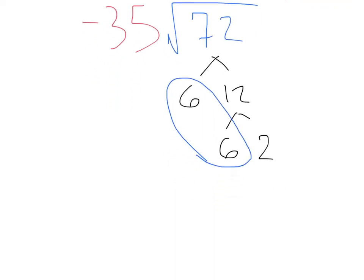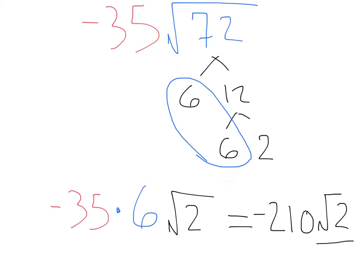That's going to leave me with outside the same negative 35 that I had before times the 6 that I simplified out. So times 6 with left inside the square root. The only thing that's left without a match is this 2. So times square root of 2. Overall, this is going to equal negative 35 times 6, which is negative 210 square root of 2.